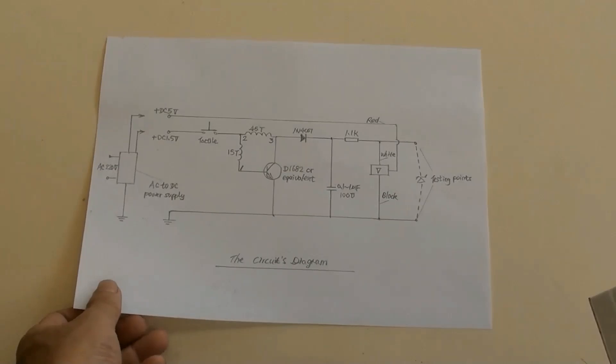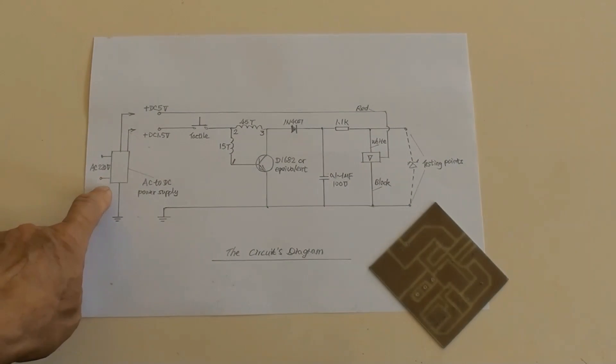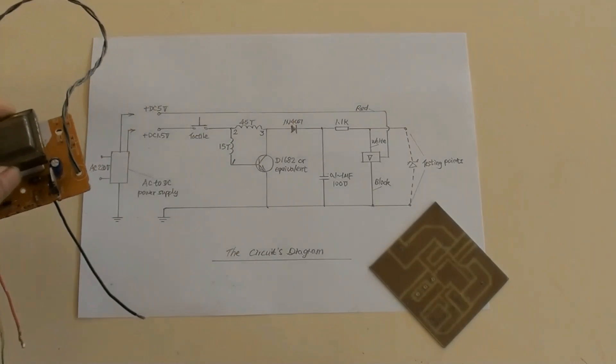This is the circuit diagram for Zener diode and LED tester. The power supply has input of AC 220 to 240 volt, and output of DC 1.5 and 5 volt.